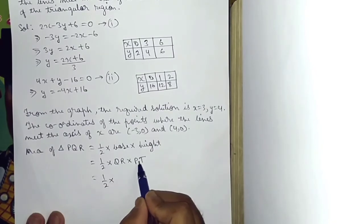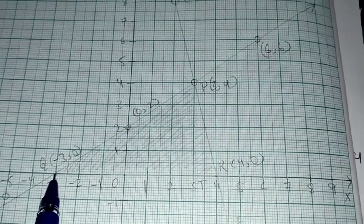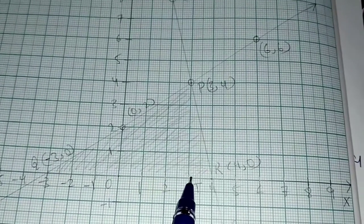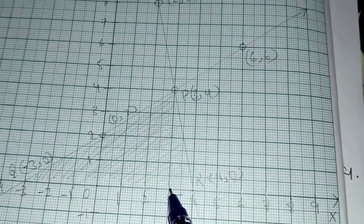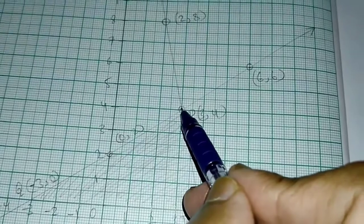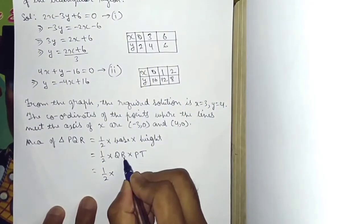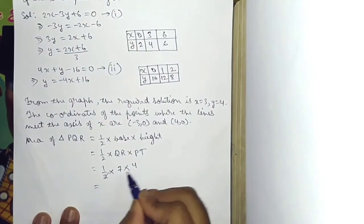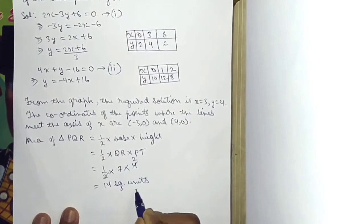From the graph, the required solution is x equals 3, y equals 4. The coordinates where the lines meet the x-axis are minus 3, 0 and 4, 0. Measuring from the graph: QR is 7 units and PT is 4 units. Area equals half into 7 into 4, which equals 14 square units. Therefore, the area of triangle PQR is 14 square units.